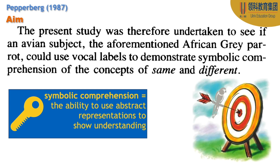Why did they specify bird species? Well, as we saw in the background, a lot of studies on animals and language usually used primates. Very rarely were non-primates used. In the 1960s and 70s some people tried to communicate with dolphins, sometimes with whales, but usually it's a primate. So the study is to see if a non-primate can demonstrate comprehension of concepts such as same or different.